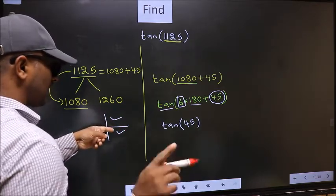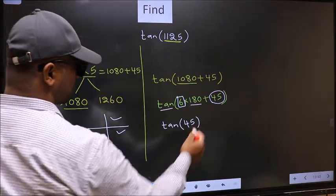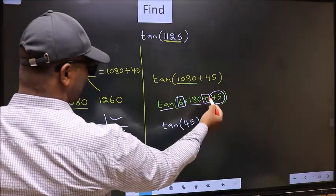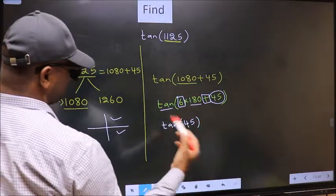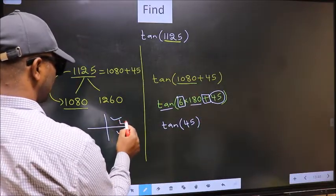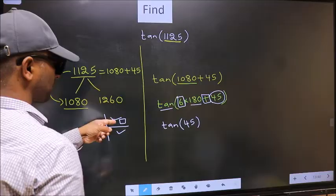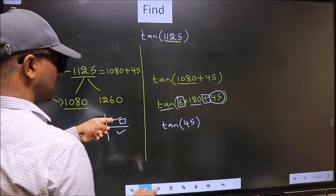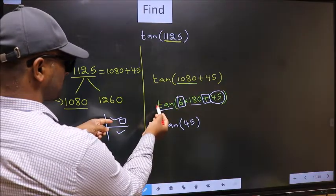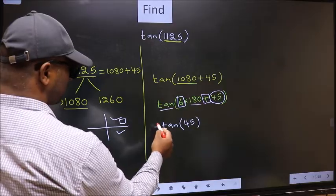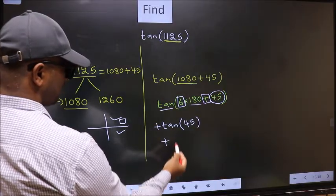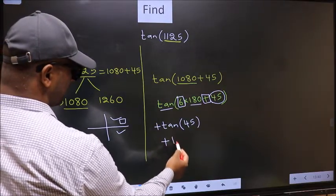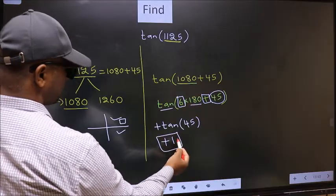So now to select the quadrant, we should look at this symbol. Here we have plus. That means the angle lies in the first quadrant. And in the first quadrant, tan is positive. So we should put plus. So plus tan 45 is 1. This is our answer.